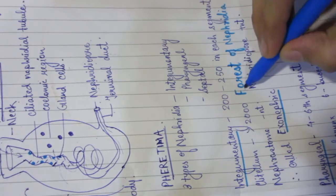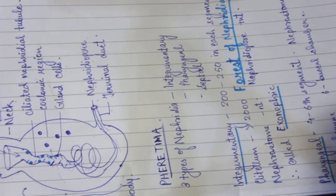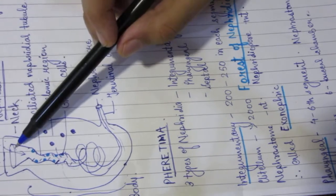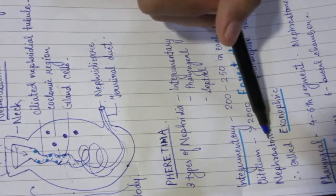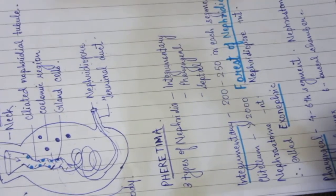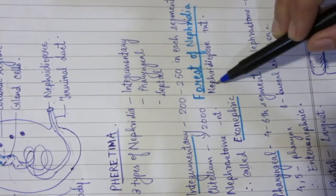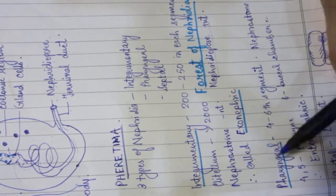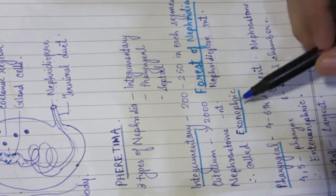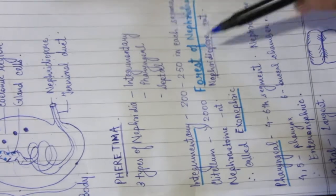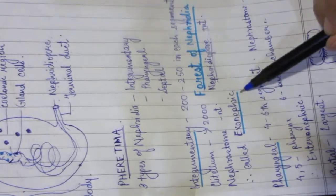This part is important: the clitellum region is called the Forest of Nephridia. The nephrostome — the ciliated funnel region — is absent here, but the nephridiopore is present. Since the nitrogenous waste goes directly out of the body through the nephridiopore, we call it exonephric.